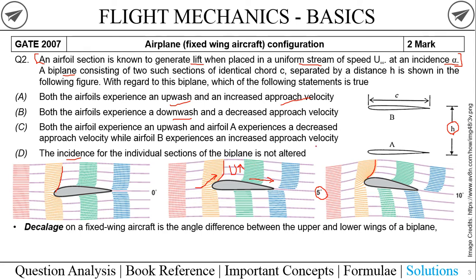Option A says both airfoils experience an upwash and increased approach velocity — this may be the right answer. Option B mentions both airfoils experience a downwash and decreased approach velocity — since velocity keeps increasing and is not decreasing anywhere, the decreased approach velocity is a wrong statement, so we strike out option B. Option C says both airfoils experience an upwash, but airfoil A experiences decreased approach velocity while B experiences increased approach velocity — this is wrong because both experience the same kind of approach velocity.